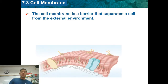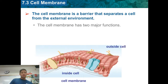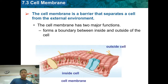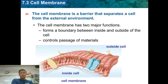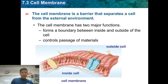Cell membrane is a barrier. We talked about some of these organelles last week, and one of the organelles we talked about is the cell membrane. It's a barrier that separates the inside of the cell from the outside of the cell, and it also allows just certain things to pass through that membrane.